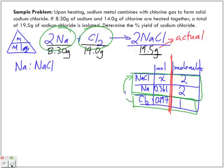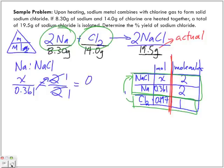So we've got x over 0.361 equals 2 over 2. So 2 over 2 becomes 1 over 1, and when we bring the 0.361 over, the number of moles are equal to one another: 0.361 moles. So if we have 0.361 moles of sodium, we're also going to have 0.361 moles of sodium chloride.